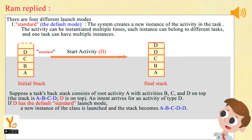There are four different launch modes. 1. Standard — the default mode. The system creates a new instance of the activity in the task. The activity can be instantiated multiple times, each instance can belong to different tasks, and one task can have multiple instances.